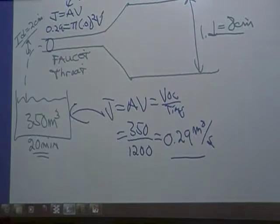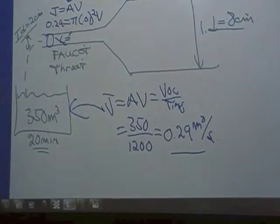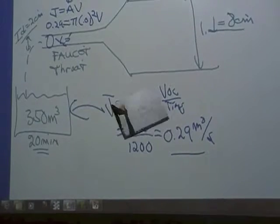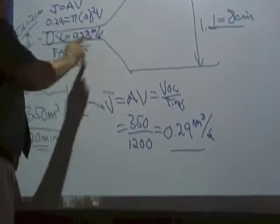Velocity, one equation, one unknown. Velocity gives us, I'm going to call that V sub T, velocity in the throat. A little unreasonable. Meters per second? Yes. Good.